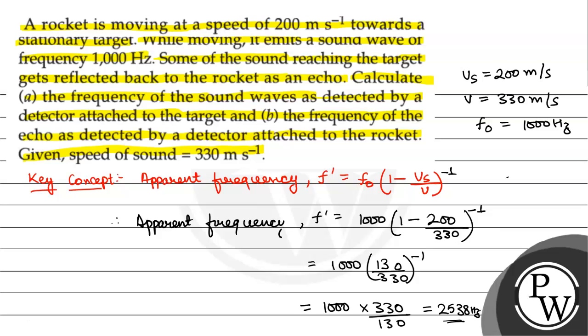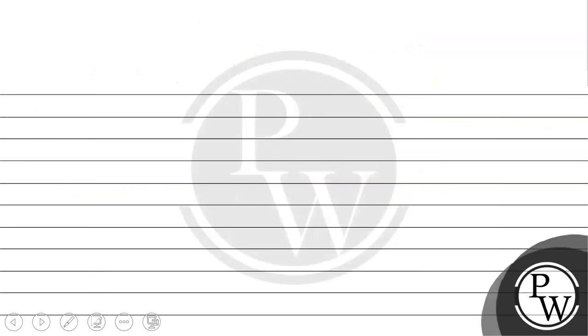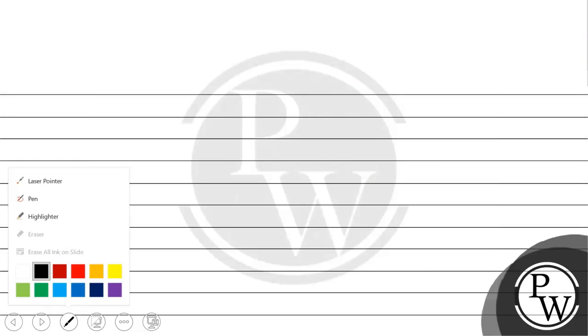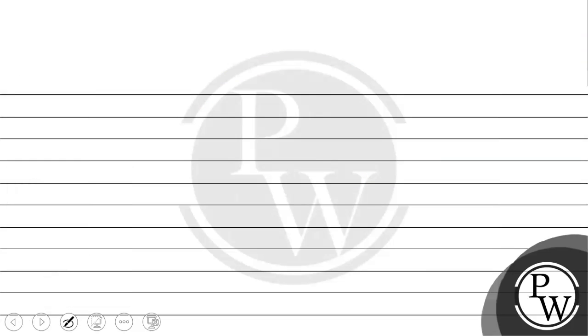Now, the second part: the frequency of the echo as detected by a detector attached to the rocket. In this case, the source is at rest because the target is source of echo and the rocket detector, the listener, is moving.